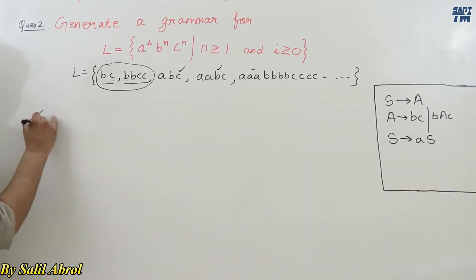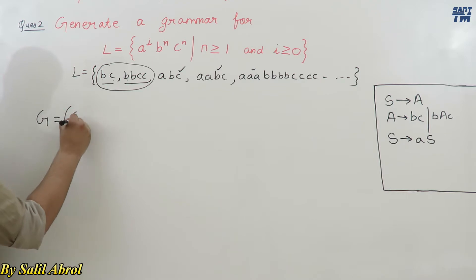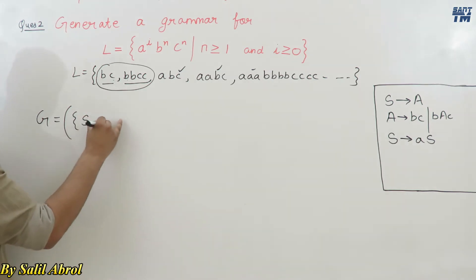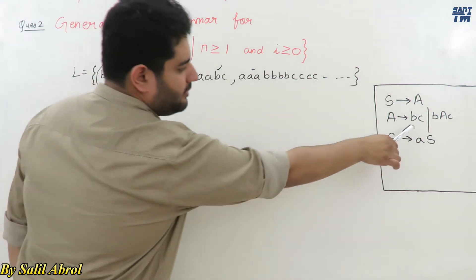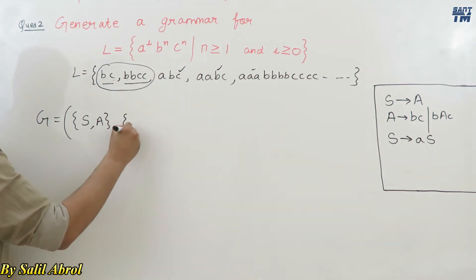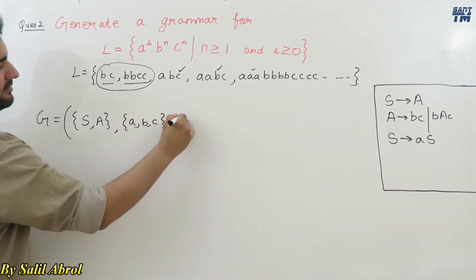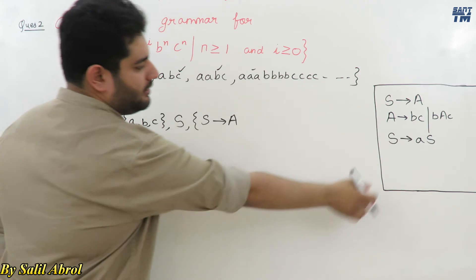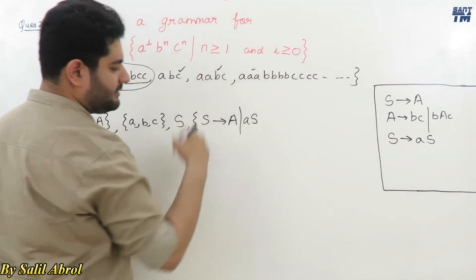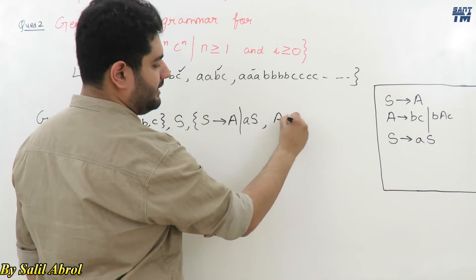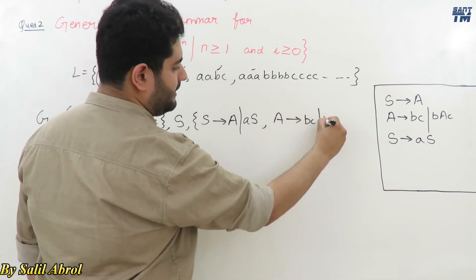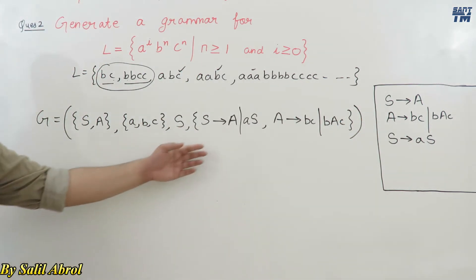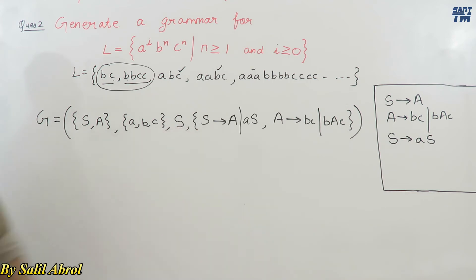The formal grammar definition is: non-terminals = {S, A}; terminals = {a, b, c}; start symbol = S; production rules: S → A | aS, and A → bc | bAc. This is our complete grammar.